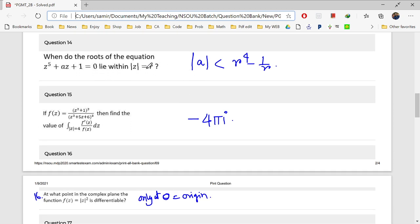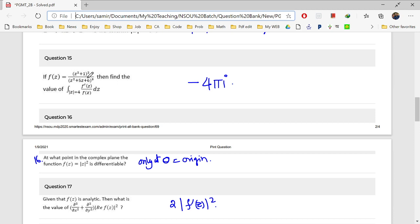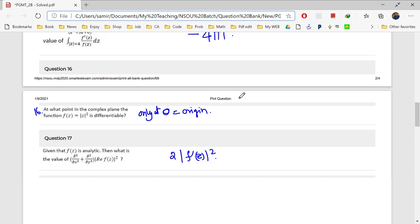Question number 14. Question number 15. Eta argument principle. So eta answer is minus 4 pi i.